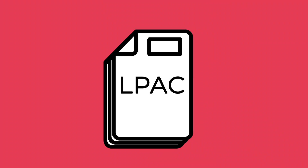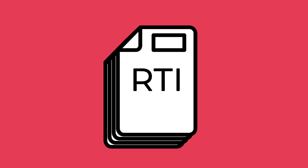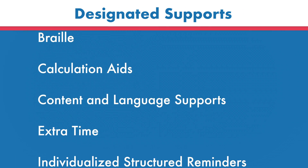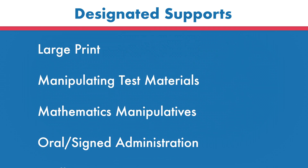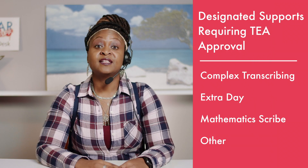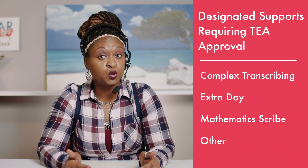Be careful. Designated supports have a different process. A decision-making committee looks at the qualification criteria. Those committees could be an IEP, 504, an LPAC, an RTI, or student support teams that make and document decisions. Here's a reminder of the designated supports. Remember, there are four that TEA has to approve to be used on the test.